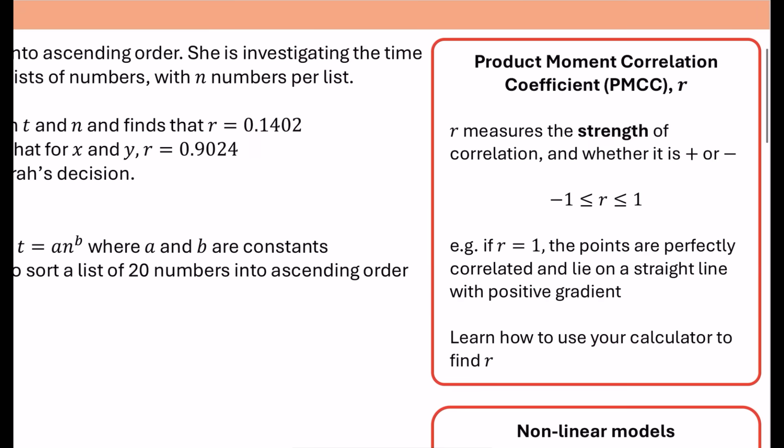Now, one of the first things that we learn about in the year two stuff is this idea of wanting to measure the strength of correlation. This thing called the product moment correlation coefficient, very long phrase for this, which is sometimes called the PMCC. The letter R is the thing that we're going to be calculating. What it does is it measures the strength of the correlation and whether the correlation is positive or negative.